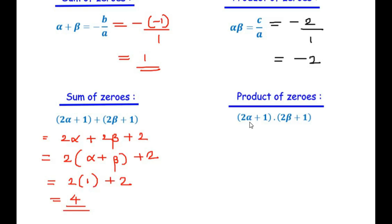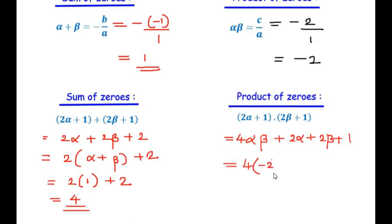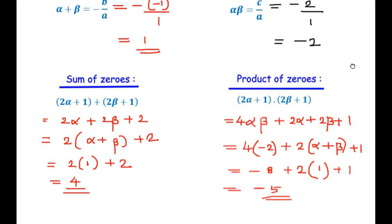Now for the product of zeros: (2 alpha plus 1) times (2 beta plus 1) expands to 4 alpha beta plus 2 alpha plus 2 beta plus 1. This equals 4 times alpha beta plus 2 times (alpha plus beta) plus 1. Substituting alpha beta equals negative 2 and alpha plus beta equals 1: 4 times negative 2 plus 2 times 1 plus 1 gives negative 8 plus 2 plus 1, which equals negative 5.